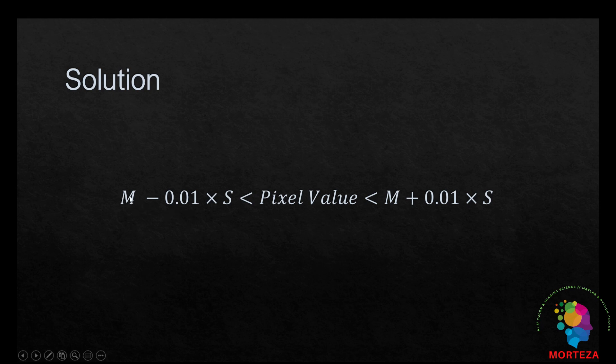M would be the mean and S would be the standard deviation of the window. And you would check it for each window and you would check it with the value of the pixel. If it's outside this range, it's noise.